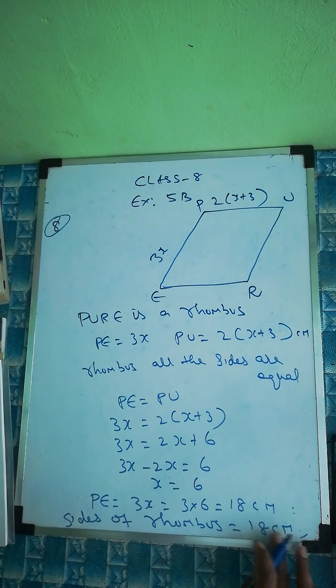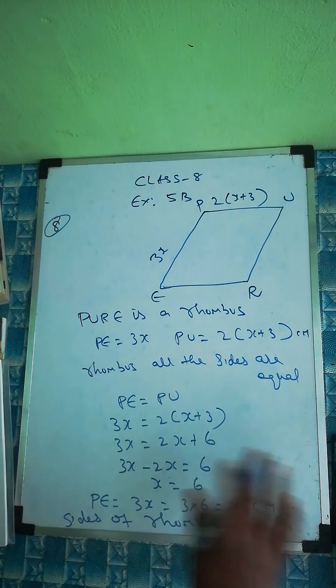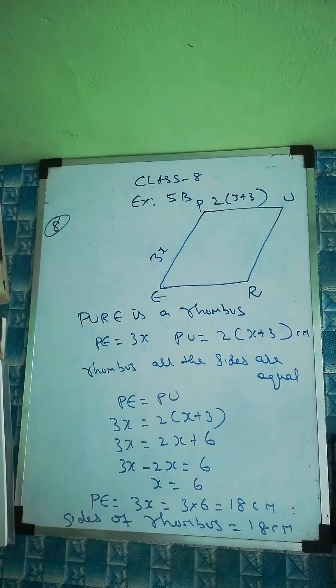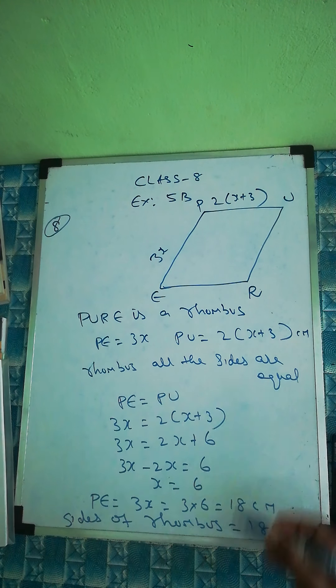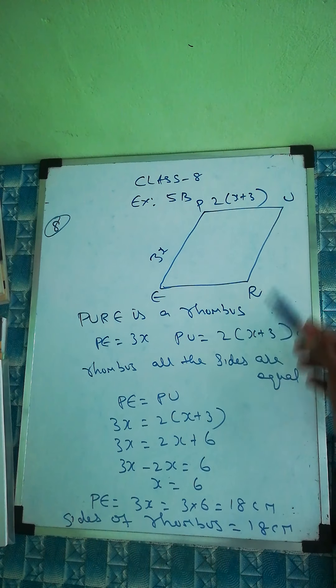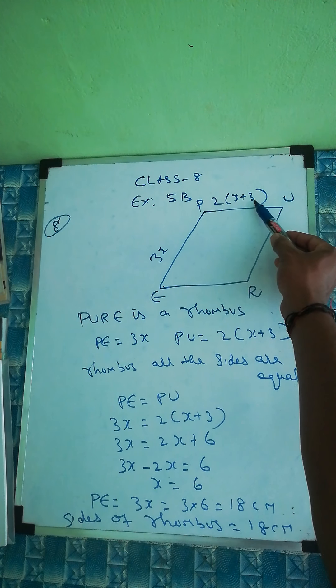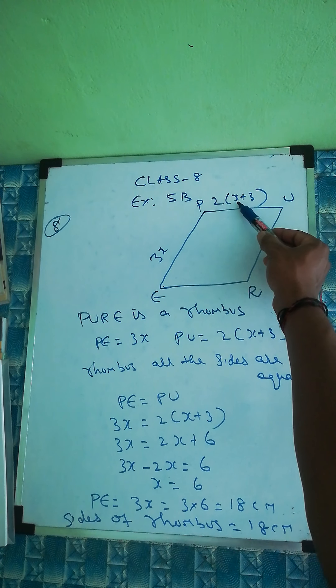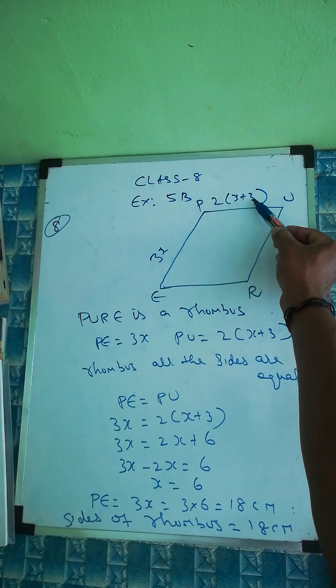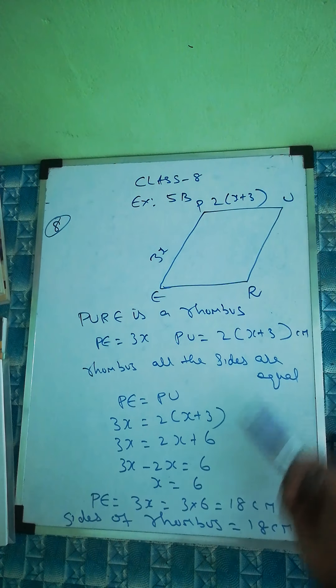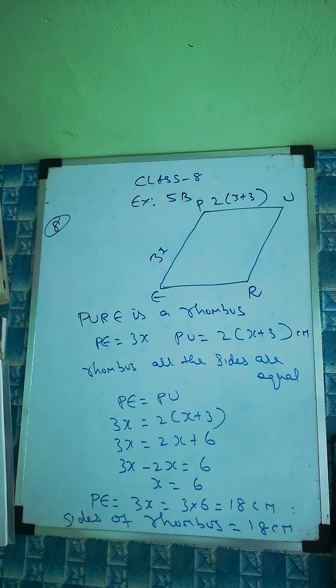Therefore the sides of the rhombus equal 18 centimeters. We can verify: if x is 6, then 2(6+3) equals 2 times 9 equals 18 — same answer, correct.